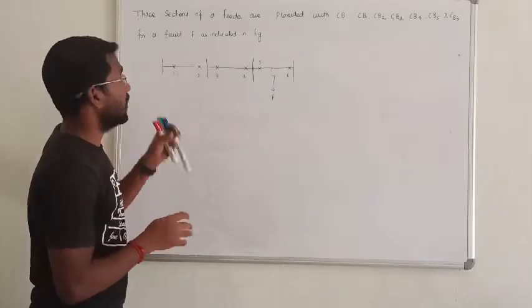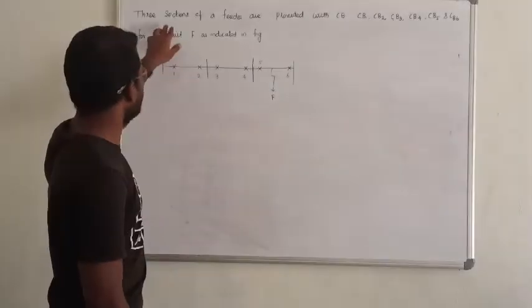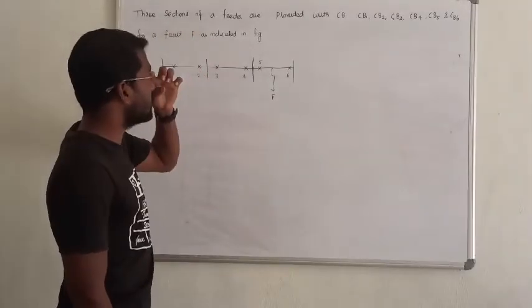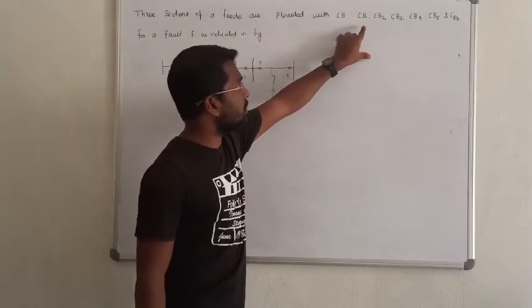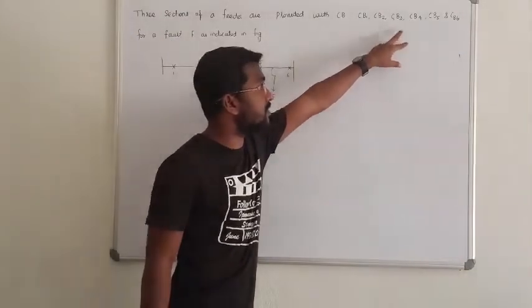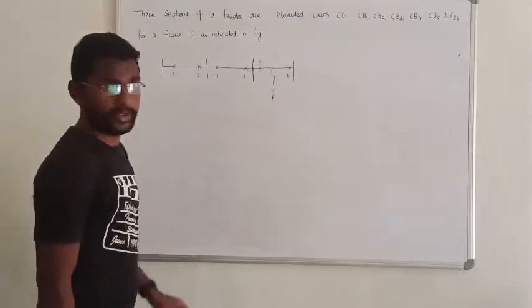Hello guys. The next question is: Three sections of a feeder are protected with circuit breakers CB1, CB2, CB3, CB4, CB5, and CB6.